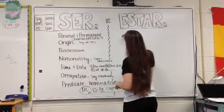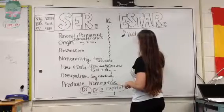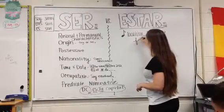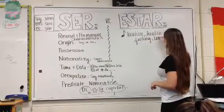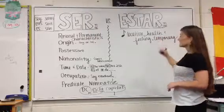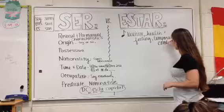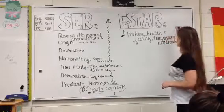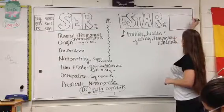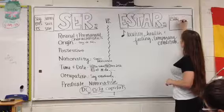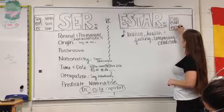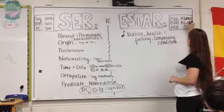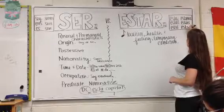Now we have a song to help remember the estar verbs: 'location, health, and feeling, temporary condition.' Temporary condition is what you use when you really can't decide, but location, health, and feeling trumps it. The forms of estar are: I am = estoy, you are = estás, he or she is = está, we are = estamos, y'all are in Spain = estáis, and plural = están.